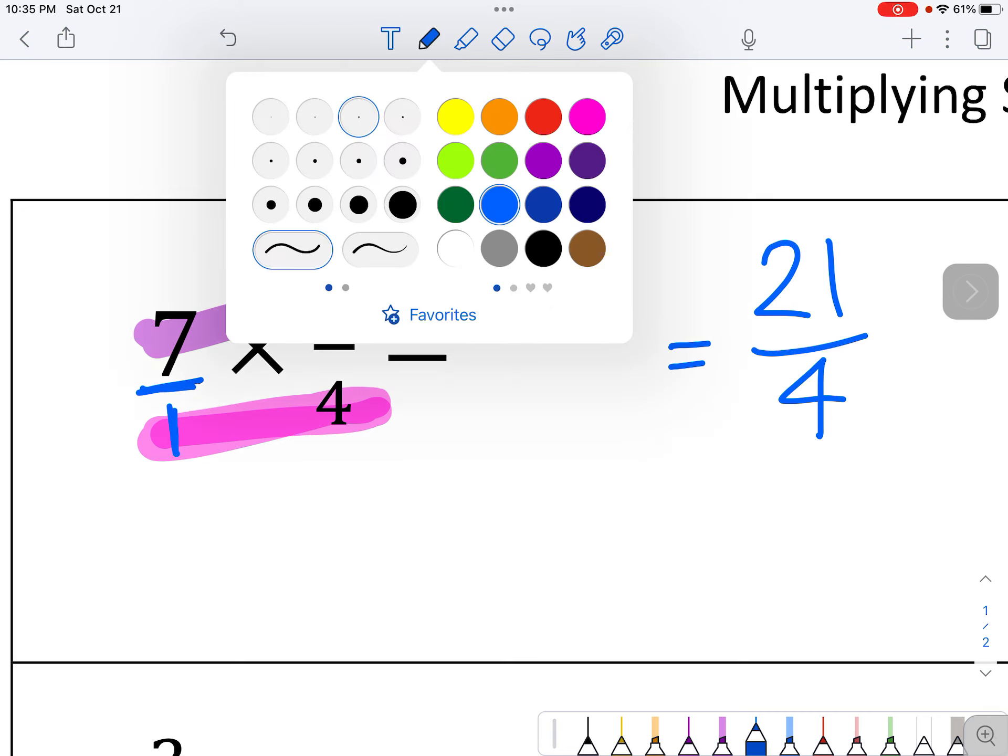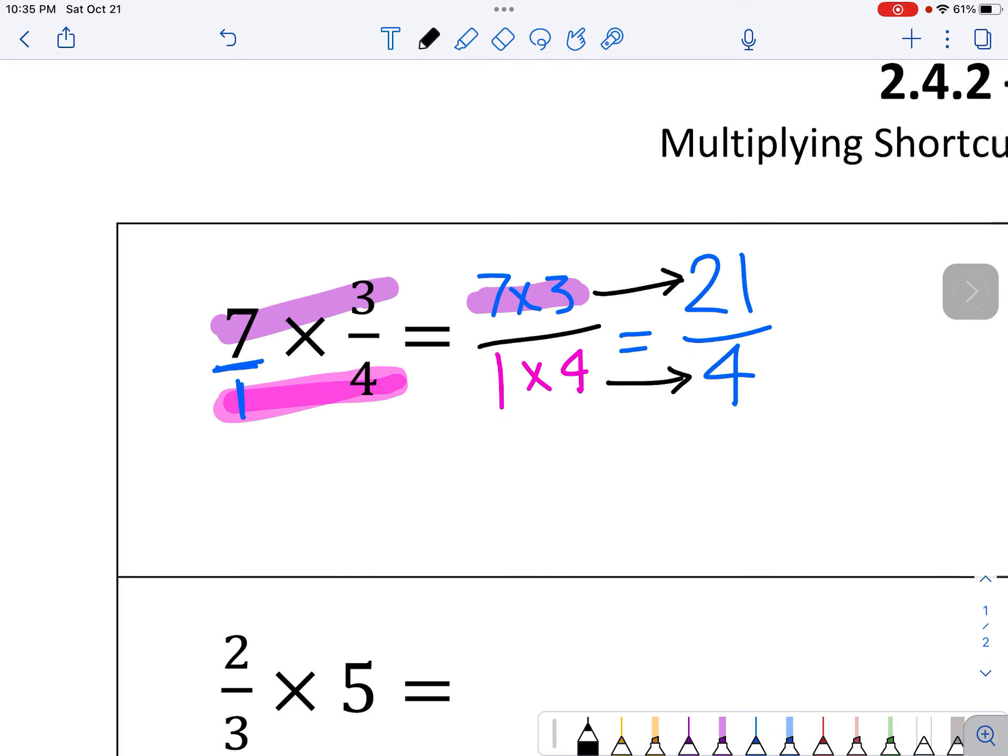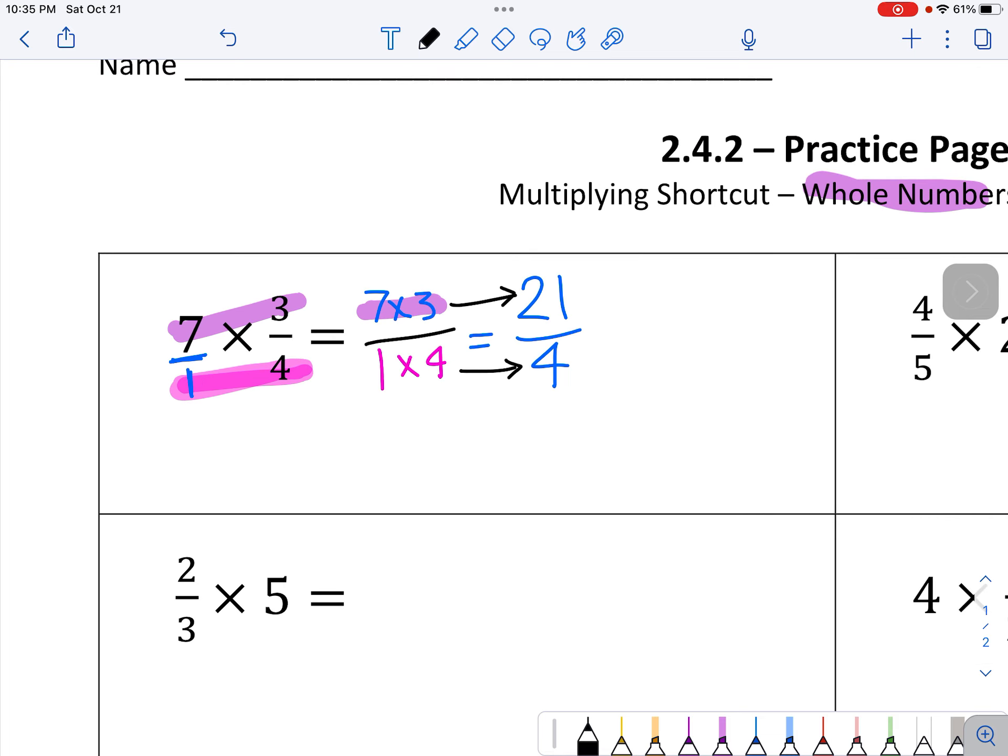Those are kind of similar colors. 1 times 4. So now, 7 times 3 is 21, 1 times 4 is 4. You are welcome to change this into a mixed number, or you can just leave it as 21 fourths.